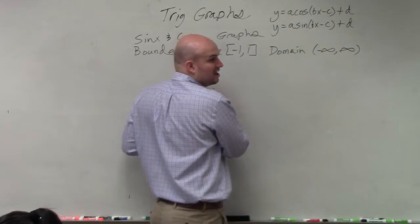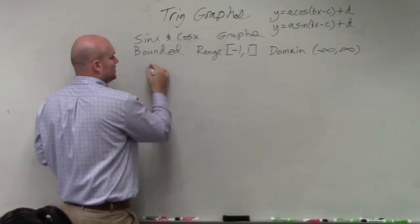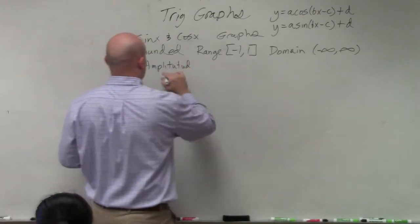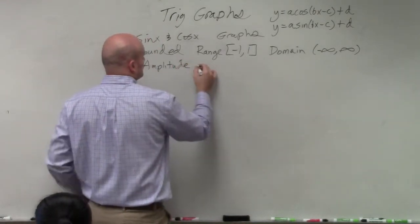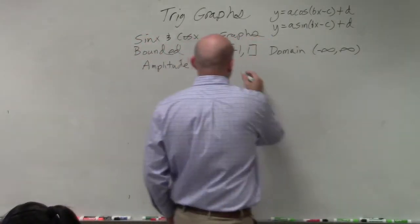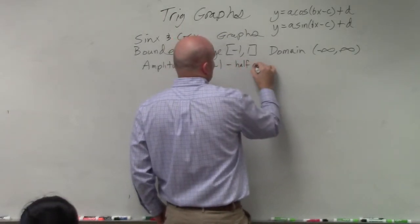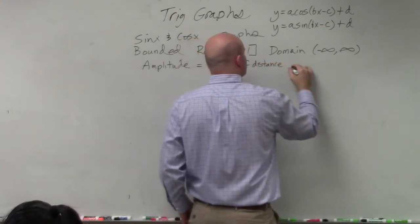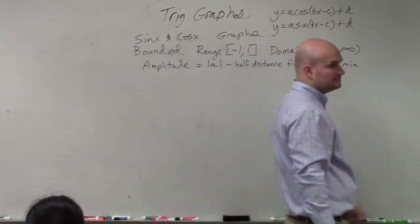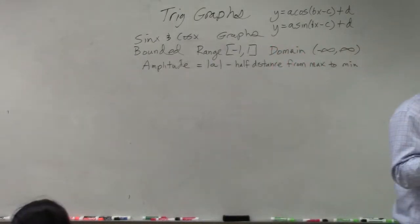So a can affect our amplitude. And basically, our amplitude is going to be the absolute value of a, which basically just means the half distance from your max point to your min. That's really what the amplitude is representing. It's the half distance. However, the amplitude is just whatever the absolute value of a is.